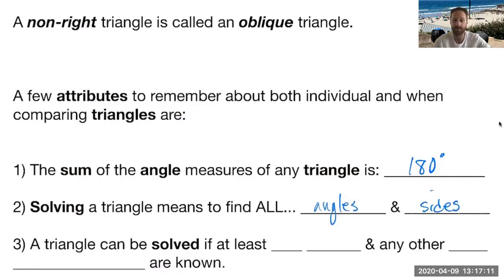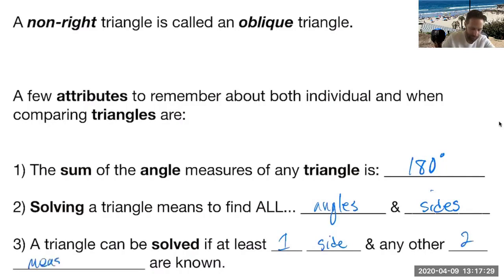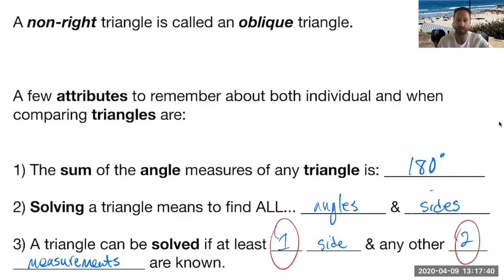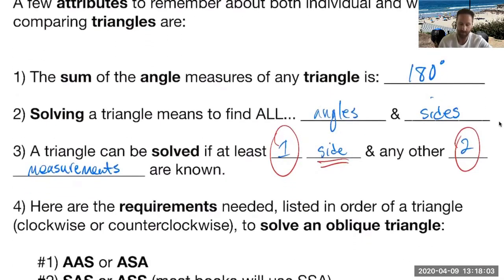In order to solve a triangle and find all its missing parts, we need to at least have one side and any other two measurements. So basically we need three pieces of our triangle, including one side in particular. As long as we have that, then we can solve that triangle by finding the other unknown parts, whether that be two sides and one angle or what have you.